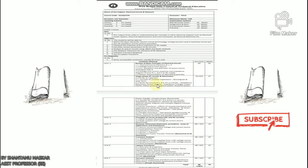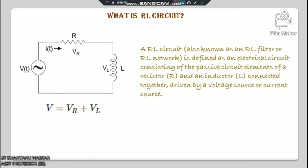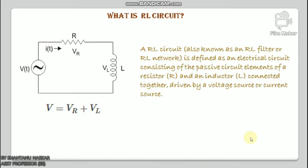So what is an RL circuit? An RL circuit, also known as an RL filter or RL network, is defined as an electrical circuit consisting of the passive circuit elements of a resistor R and an inductor L connected together, driven by a voltage or current source. Due to the presence of a resistor, an RL circuit will consume energy, unlike the ideal form of an LC circuit which consumes no energy due to the absence of a resistor — although in practice even an LC circuit will consume some energy because of the non-zero resistance of the components and connecting wires.